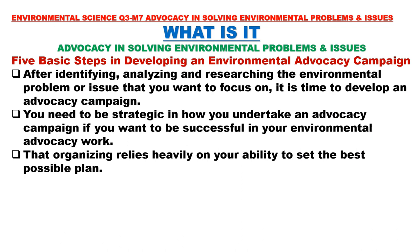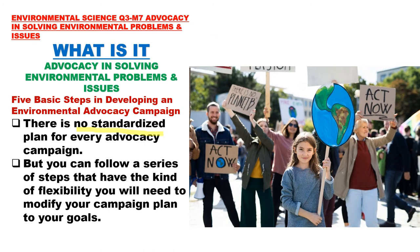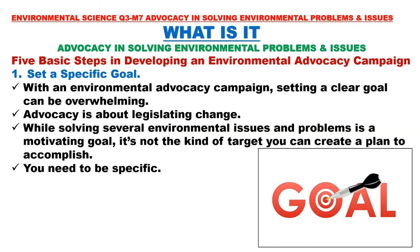After identifying, analyzing, and researching the environmental problem or issue you want to focus on, it is time to develop an advocacy campaign. You need to be strategic in how you undertake an advocacy campaign if you want to be successful in your environmental advocacy work. That organizing relies heavily on your ability to set the best possible plan. There is no standardized plan for every advocacy campaign, but you can follow a series of steps that have the flexibility you will need to modify your campaign plan to your goals. Here are five basic steps in developing an environmental advocacy campaign.